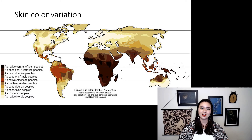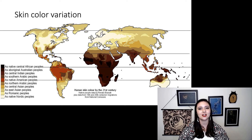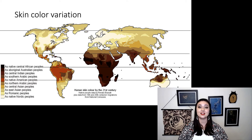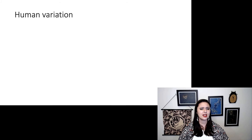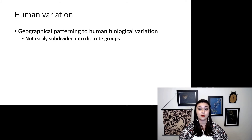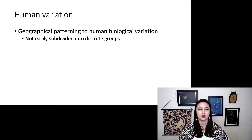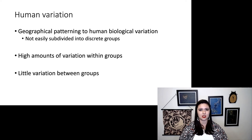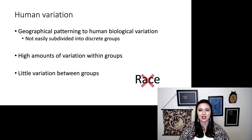If you read Nina Jablonski's paper on skin color variation, you would know that human skin color is simply an adaptation against UV radiation. If you're in an area with more intense UV radiation, you're going to have darker skin, and if you're in an area without much UV radiation, you will have lighter skin. To recap with human variation: we see definite geographical patterning, but we can't subdivide it into discrete groups. We see clinal gradations with no obvious lines we can draw anywhere. We find a high amount of variation within each group, but between these groups there isn't much variation. None of this really matches up with any classic ideas on race.